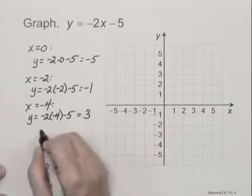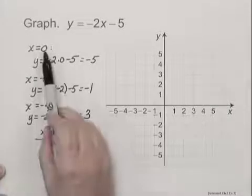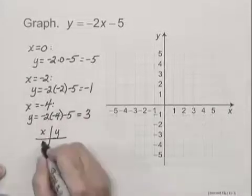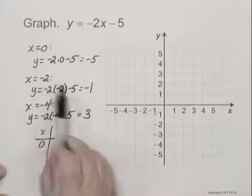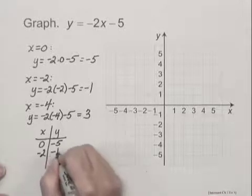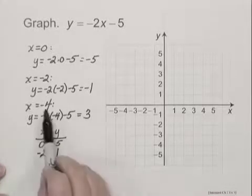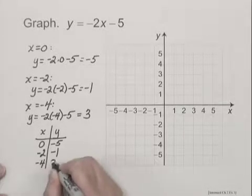And we can organize those into a chart. When x is 0, y is negative 5. So we have 0, negative 5. When x is negative 2, y is negative 1. So we have negative 2, negative 1. And when x is negative 4, y is 3. So we have negative 4, 3.